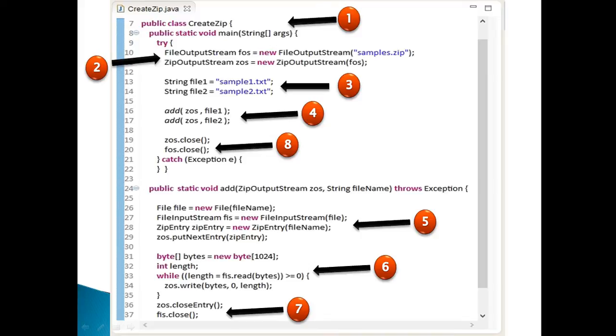Step 4. In order to add these two text files to samples.zipFile, we call a static method by name add, that takes in a ZipOutputStream and file name into it. We call this method twice to add one file at a time to zip.